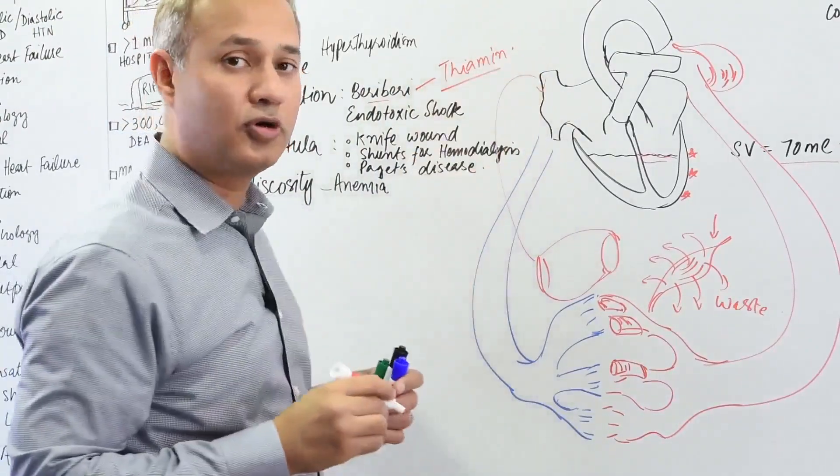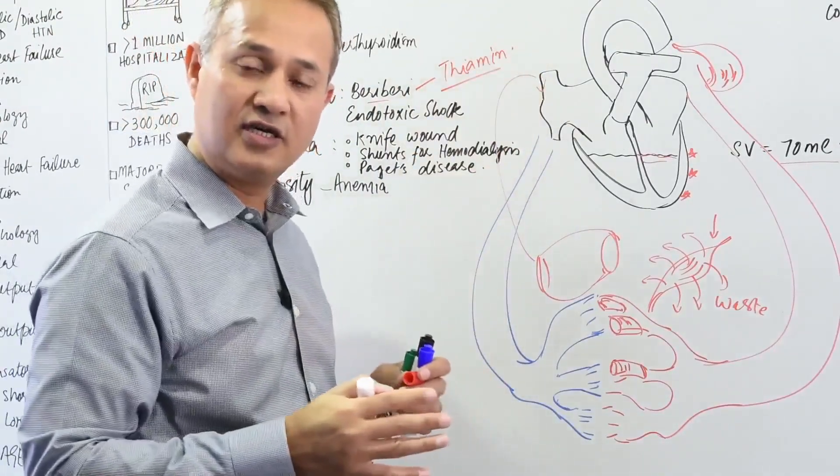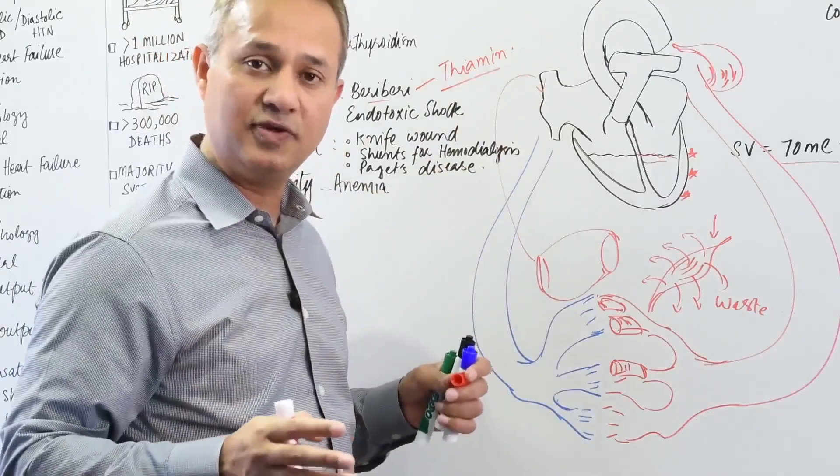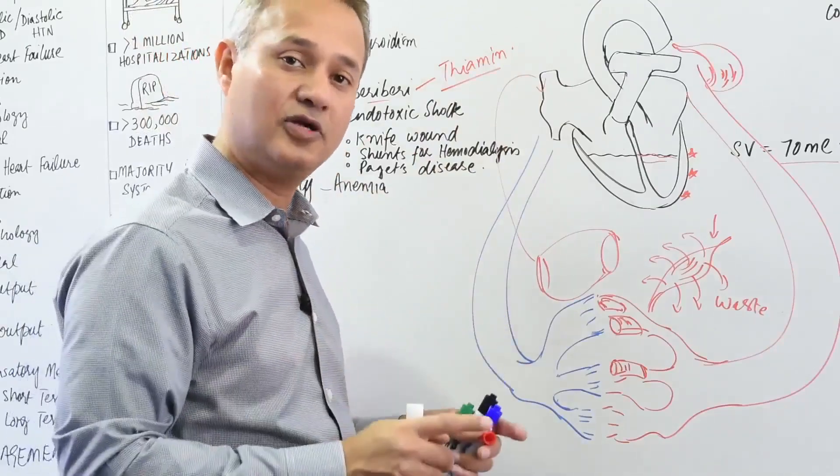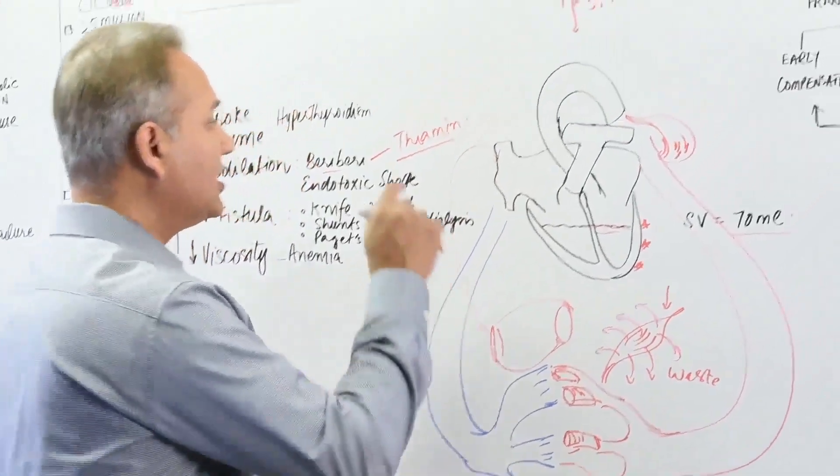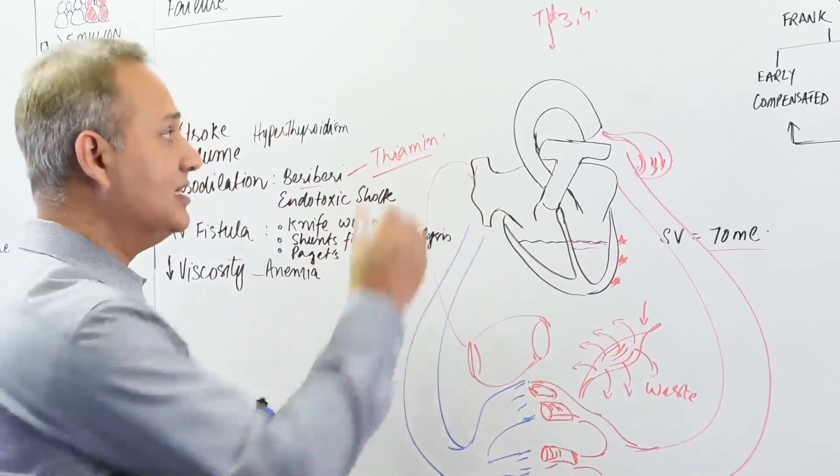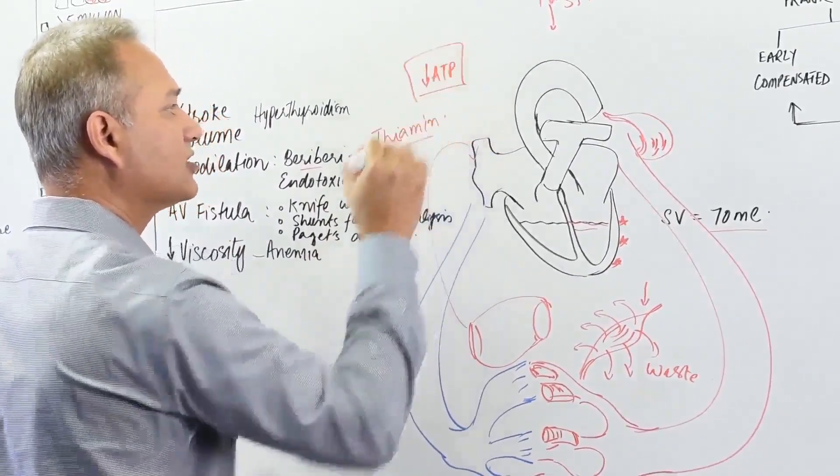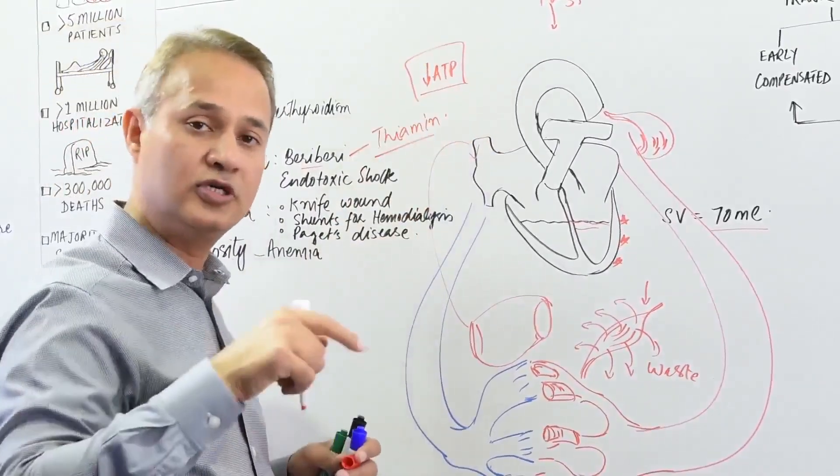Thiamine is an important cofactor in ATP formation, the cycles. The ATP formation is dependent upon thiamine's presence. When there is thiamine deficiency, there is less ATP. All of the thiamine problems you can actually relate them to reduced ATP.